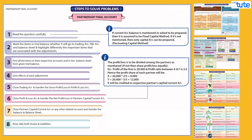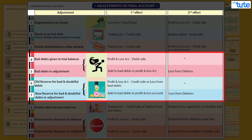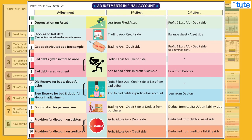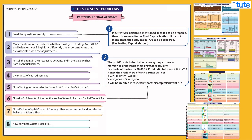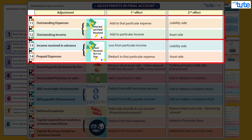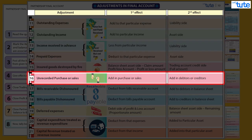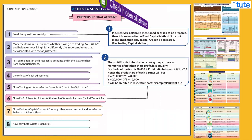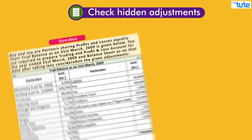Here we are listing down some common adjustments: closing stock, bad debts (prepare proper format if required), depreciation, bills receivable honored or dishonored, prepaid and outstanding expense or income, and unrecorded purchases or sales, and so on.